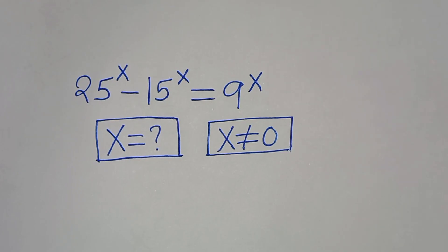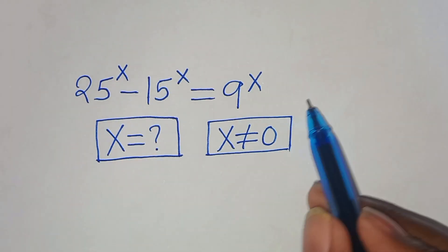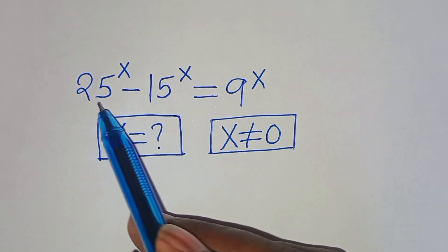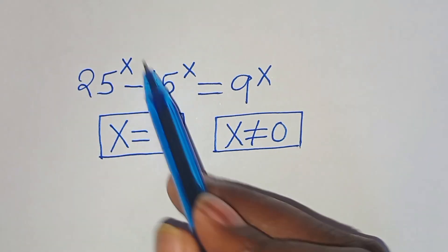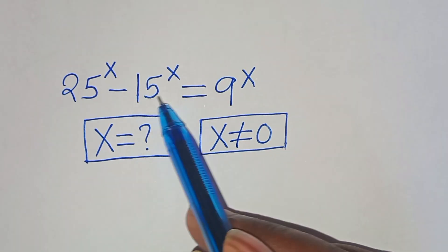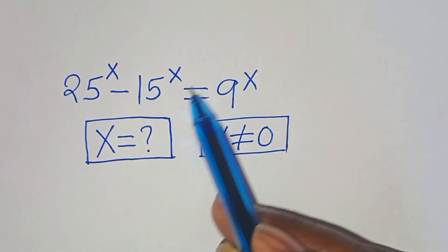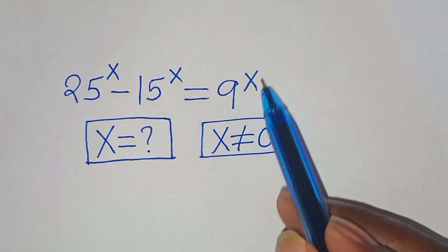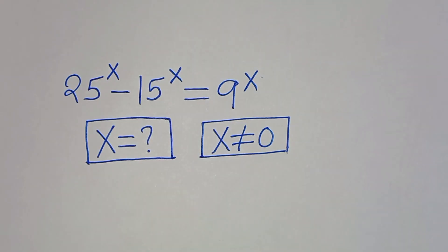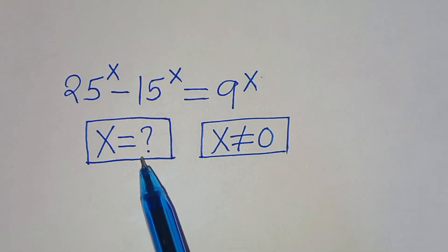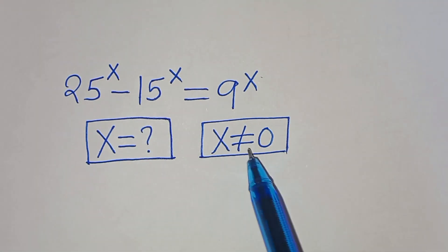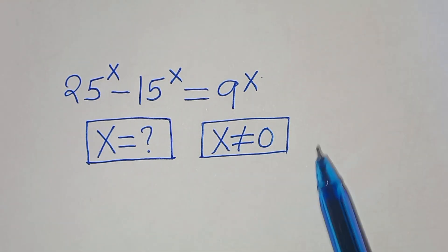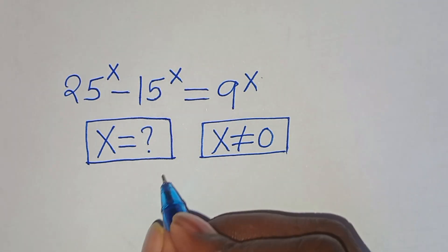Hello everyone, you are welcome to solve this nice algebra problem: 25 to the power of x minus 15 to the power of x equals 9 to the power of x. What is the value of x, given that x is not equal to 0?